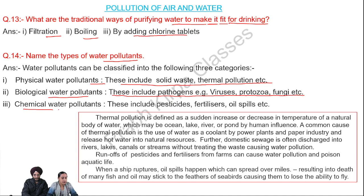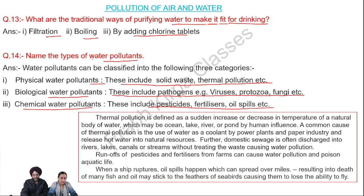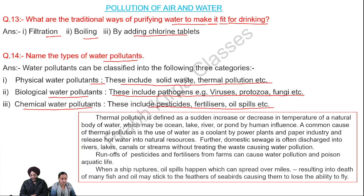Number 3: chemical water pollutants — these include pesticides, fertilizers, oil spills, etc. We have divided water pollutants into three types: physical, biological, and chemical. Physical water pollutants include solid waste and thermal pollution.